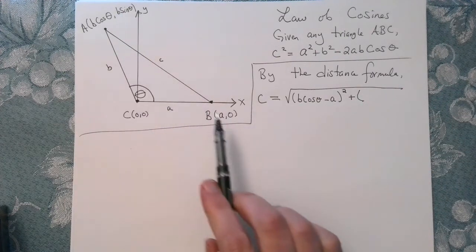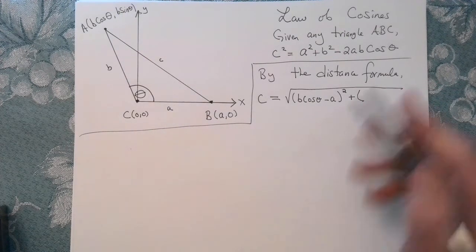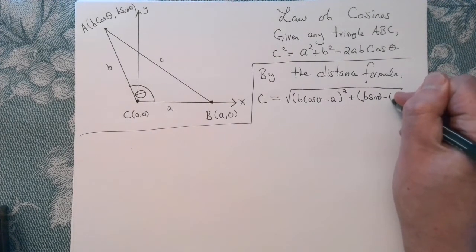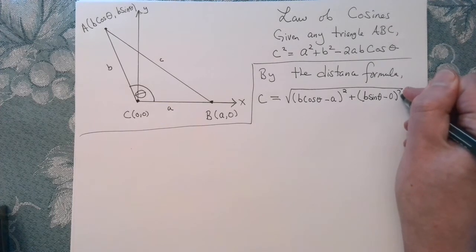plus, well, by the distance formula, I need the difference in the y components here. So that will be B sine of theta minus 0 quantity squared.